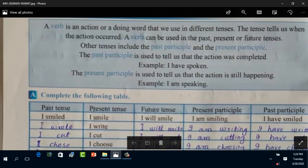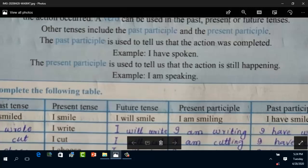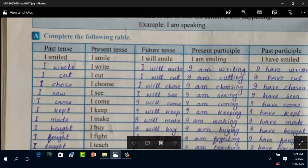The continuity and progress of action takes place in present participle. Now question number A is complete the following table. Past tense, present tense, future tense, present participle, or past participle. The first one is done for you: I smiled - past tense, I smile - present tense, future tense is I will smile, present participle I am smiling, past participle I have smiled. Number two: I write, past tense I wrote, future tense I will write, present participle I am writing, the process is still going on, past participle I have written, the process is completed.